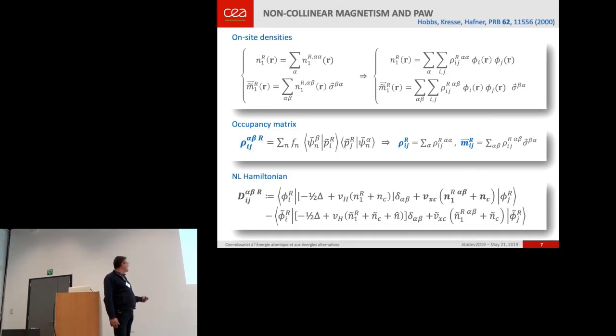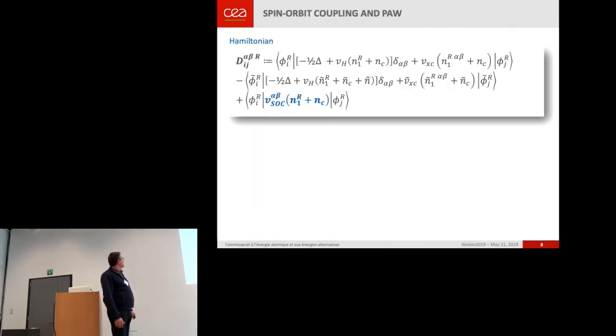And at the end, the Hamiltonian is the same. The contribution to the Hamiltonian has two spinor components. And as you see, as Eric said, the real coupling of the spinors is in the exchange correlation term because all the other terms are spin diagonal.